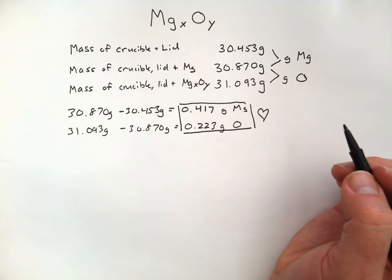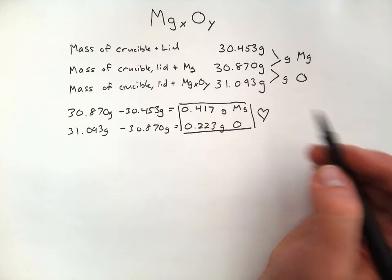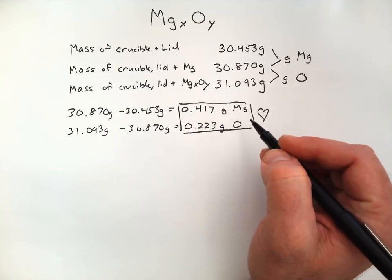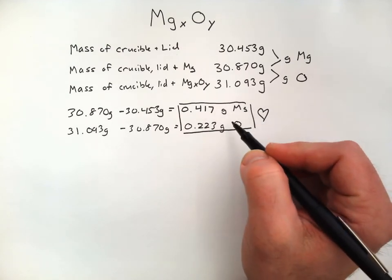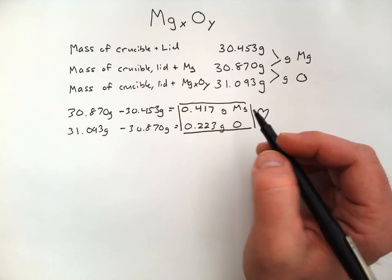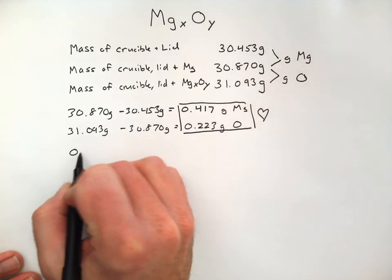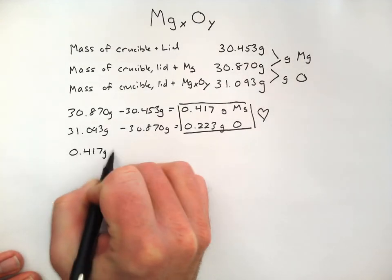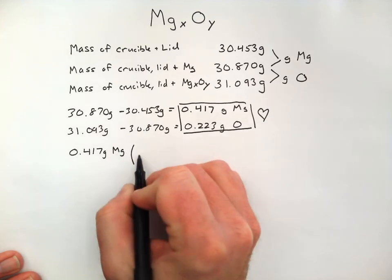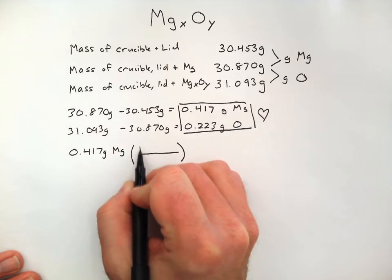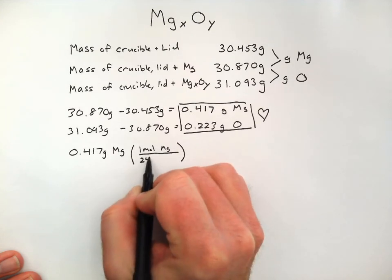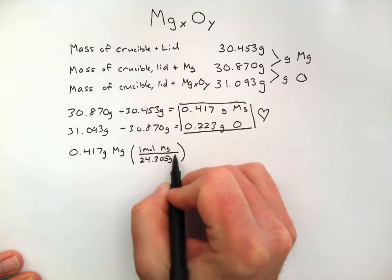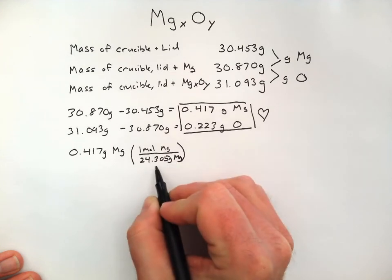The next step in determining an empirical formula is to take those masses and change them into mole values. How many moles of magnesium do I have? How many moles of oxygen do I have? So, to do so, 0.417 grams of magnesium. To convert it into moles, what I need to do is multiply by this conversion factor, one mole of magnesium over 24.305 grams of magnesium, which comes from the periodic table.